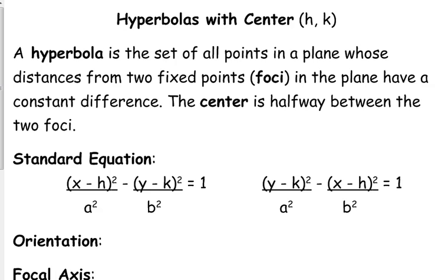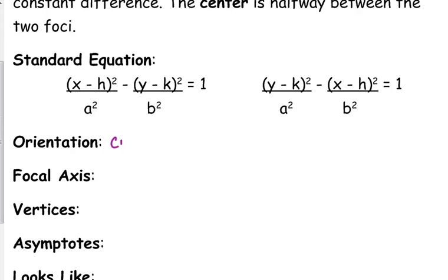So if the x comes first, then it's going to cross the x axis. Your hyperbola is going to cross the x axis. But let's just write down all the information first. Your focal axis is the same idea. If it's the x, then it's y equals k. Your vertices are the same. H plus or minus a, k.